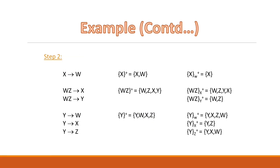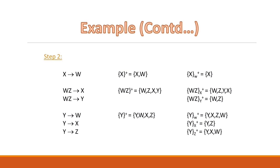Our second step is to find the closure of the left-hand side of each of the resultant FDs, once by including the functional dependency and a second time by excluding it. Consider the first functional dependency X to W. If we include this FD, the closure of X contains X and W. If we exclude it, the closure of X contains only X. Since the closure changes, we cannot remove this FD — it is an essential one.